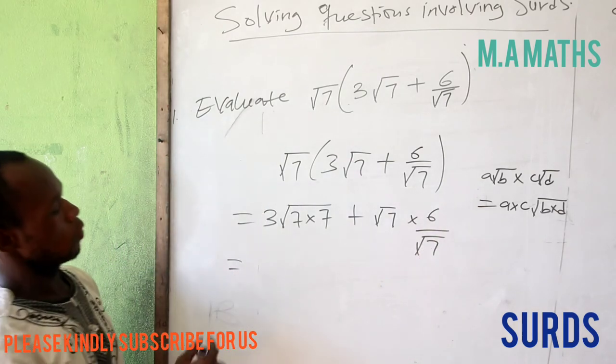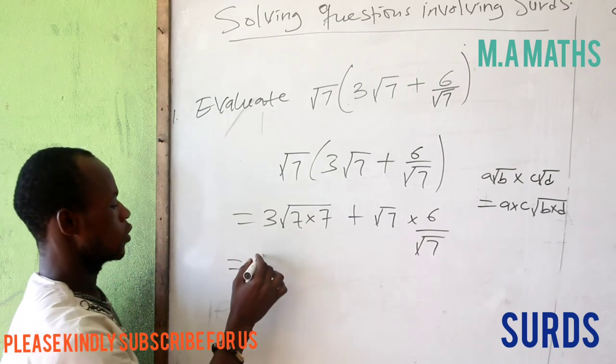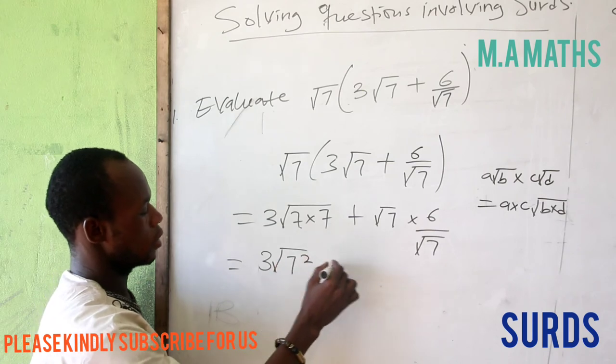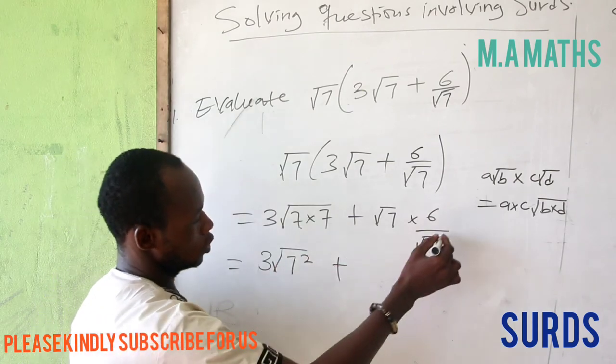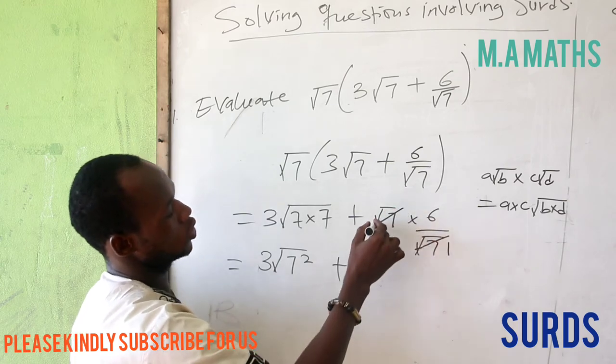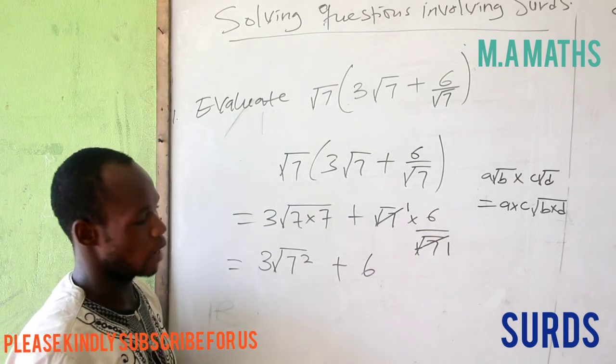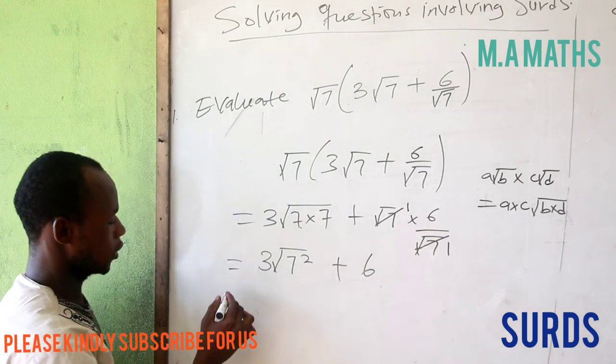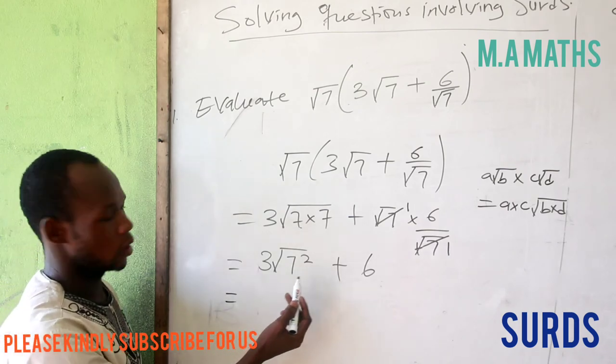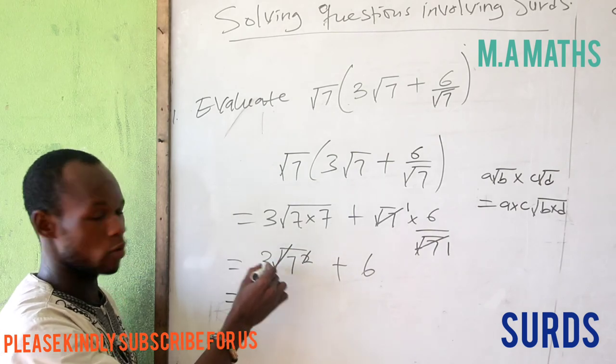We realize that 7 times 7 will give us 7 squared, so we have 3√(7²) plus 6. The square will cancel with the square root, leaving us 3 times 7 plus 6.